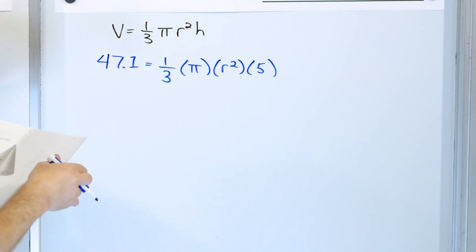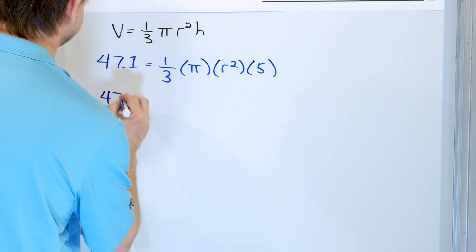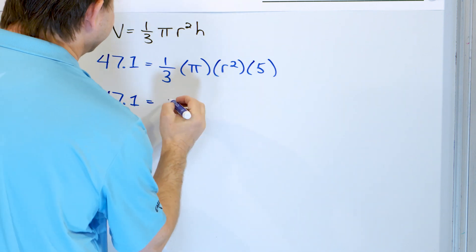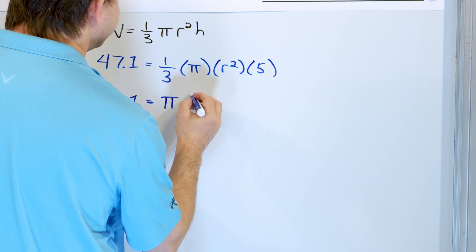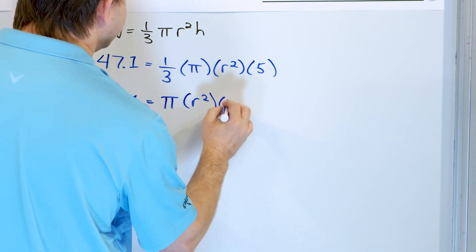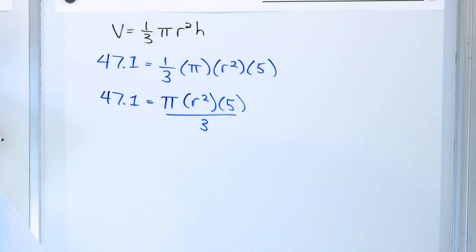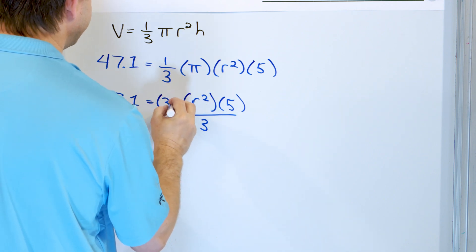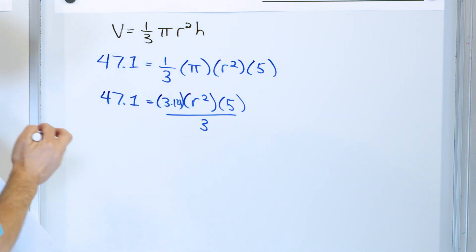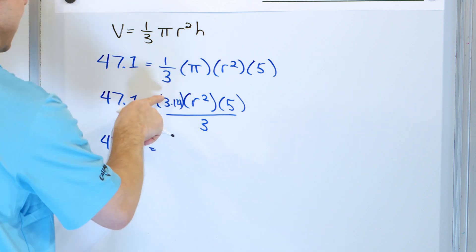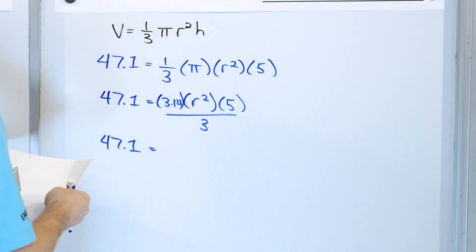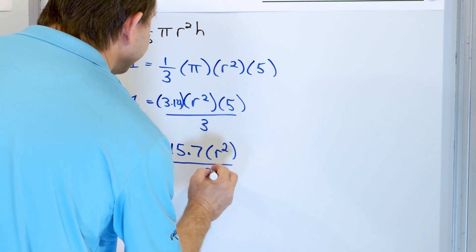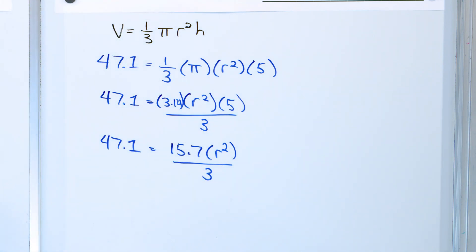So what do we do next? I'm going to do the same thing — move the 3 on the bottom because multiplying by a third is the same as dividing by 3. So I'll write it as pi times r squared times 5, divided by 3. Instead of pi, I'll substitute 3.14. I'm rounding to two decimal places. So 47.1 equals 3.14 times 5 — which works out to 15.7 — times r squared, divided by 3.